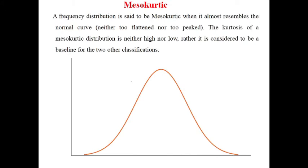Whereas a mesocurtic curve is neither too flattened nor too peaked. As you can see in the diagram, neither too flattened nor too peaked. The kurtosis of a mesocurtic distribution is neither high nor low; rather, it is considered to be the baseline for the two other classifications.